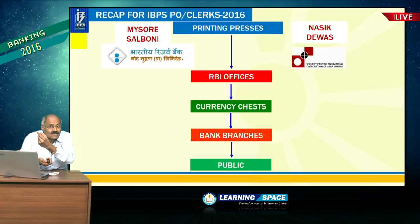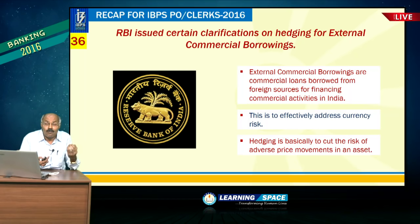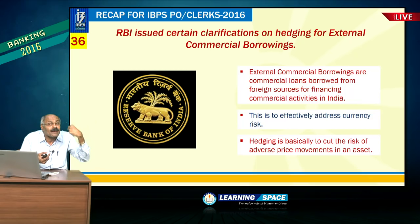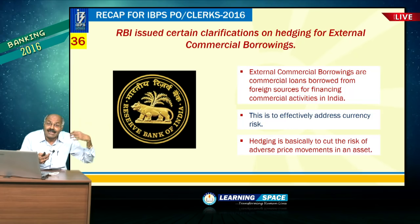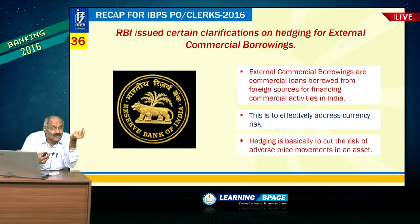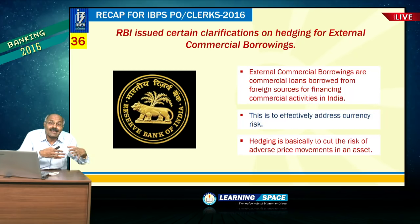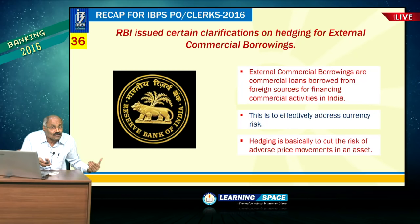RBI issued clarifications on external commercial borrowings. External commercial borrowing is commercial loans taken from abroad by Indian corporates — private or public sector. If ECB is in rupee terms, they are known as masala bonds. If in other currencies like dollar or euro, hedging is required. Hedging is basically to reduce the risk of currency depreciation.